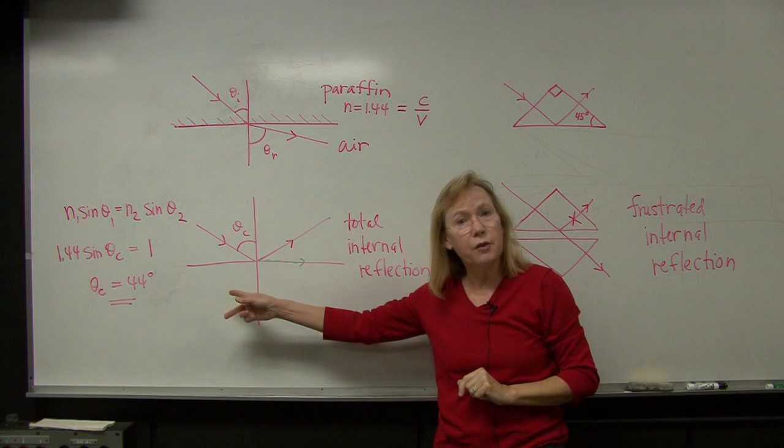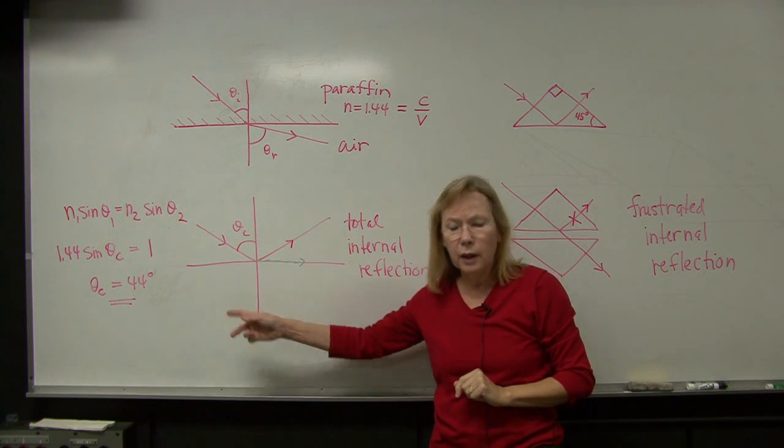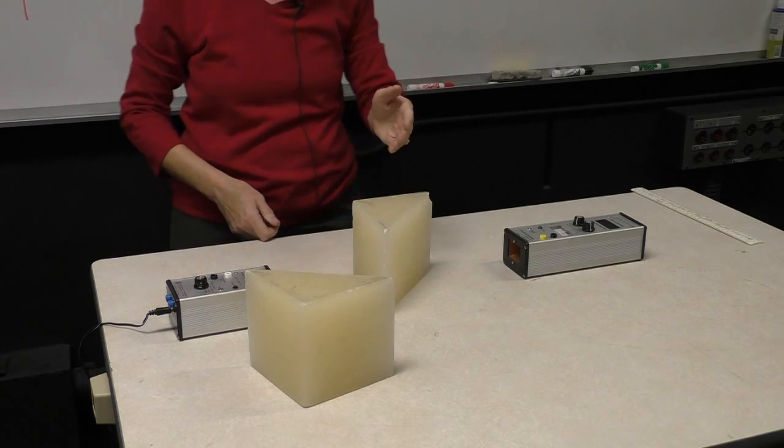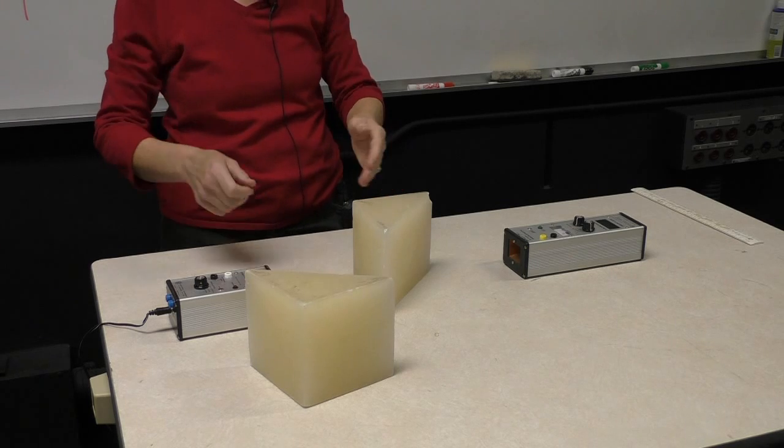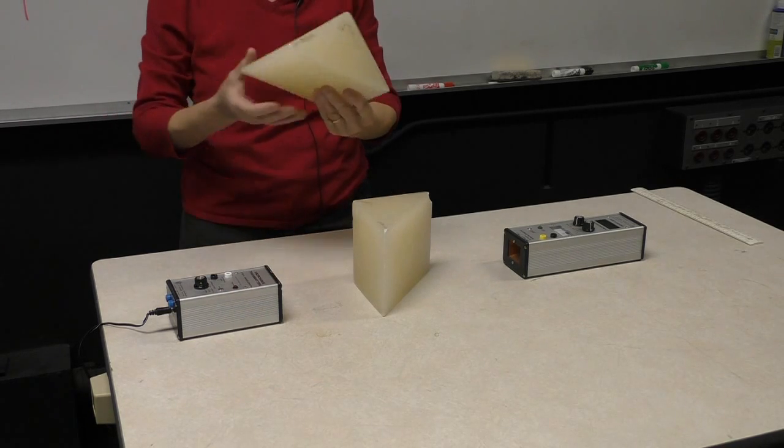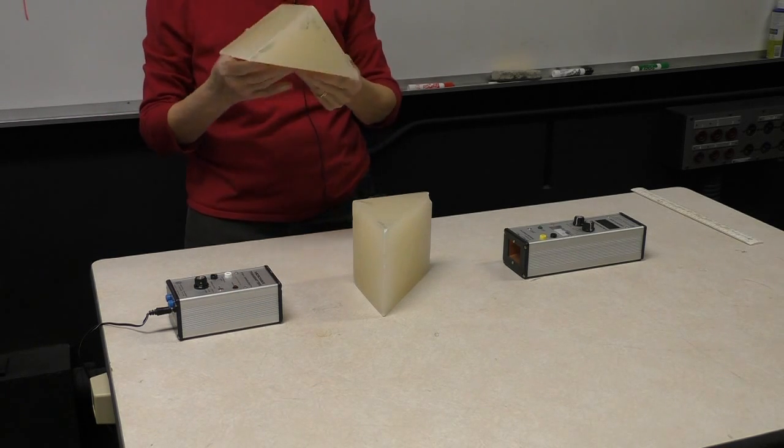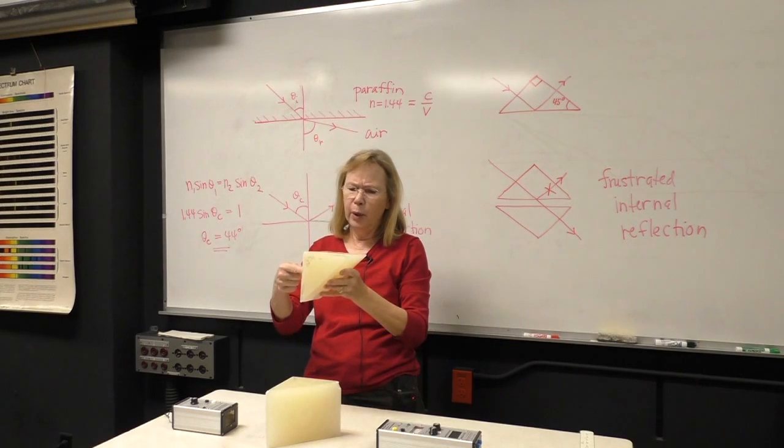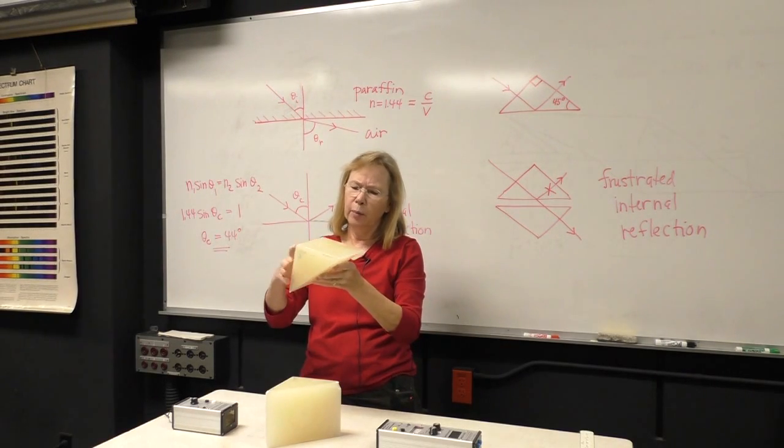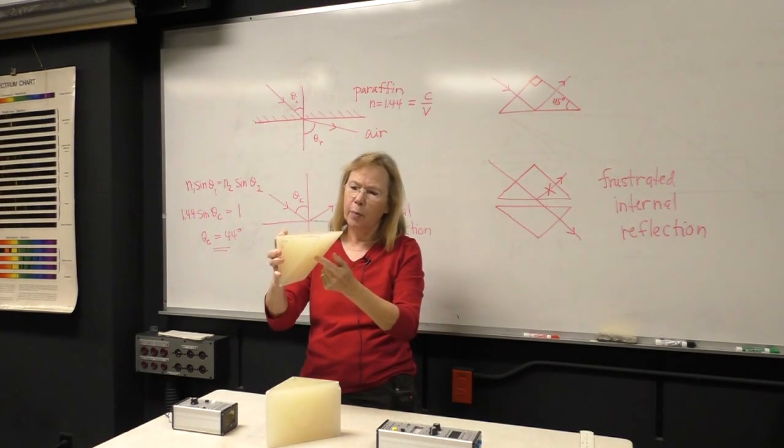Well, 45 degrees is greater than the critical angle. And so we expect to get total internal reflection in this prism as that wave impacts through the paraffin and strikes the opposite side.